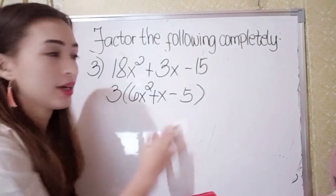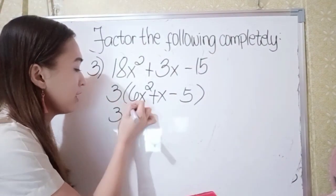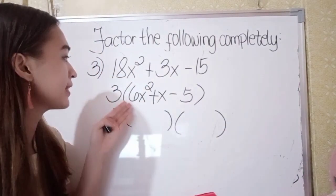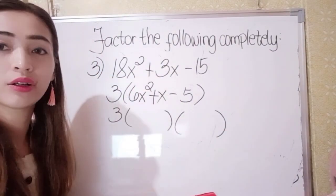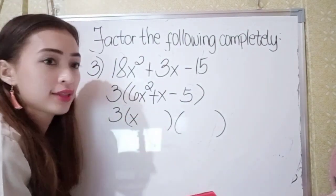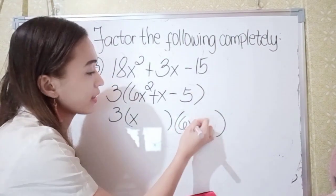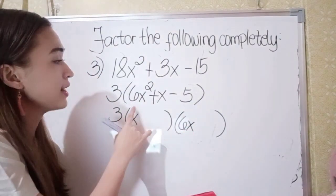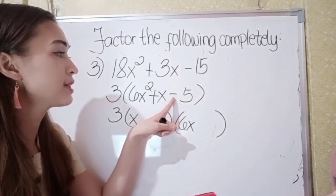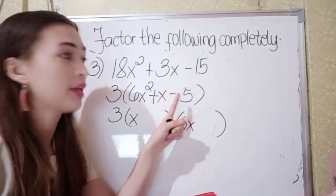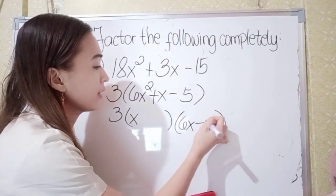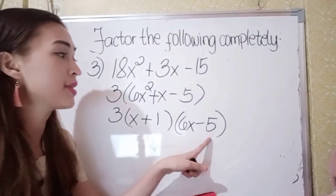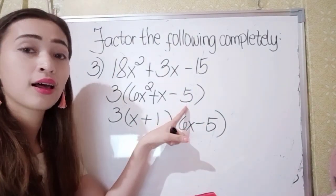Next, let's factor this. We have 3. What are the factors of 6x squared? It could be x times 6x, because 6x times x is 6x squared. What are the factors of negative 5? It could be negative 5 and positive 1, because 1 times negative 5 is negative 5.